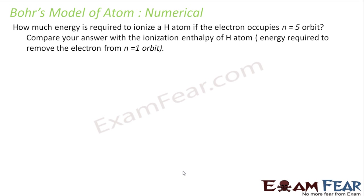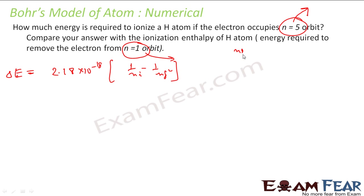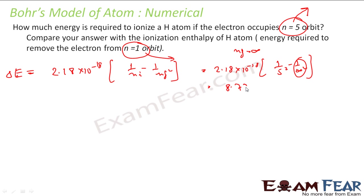How much energy is required to ionize hydrogen if the electron occupies n equal to 5 orbit? Compare your answer with the ionization enthalpy of hydrogen. So energy required to remove electron from n equal to 5 — in one case you remove it from n equal to 5, second case you remove it from n equal to 1. The formula: delta E is 2.18 into 10 to the power minus 18 times 1 by n-initial squared minus 1 by n-final squared. n-final is always infinity for ionization. So in case 1, n-initial is 5: 2.18 into 10 to the power minus 18 times 1 over 5 squared minus 1 over infinity squared — that becomes 0 — giving 8.72 into 10 to the power minus 22.